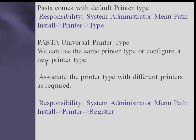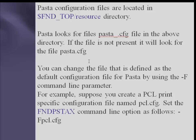Go to the System Administrator responsibility and navigate to Install > Printer > Register. Then go to menu path Install > Configuration Files. PASTA configuration files are located in the $FND_TOP/resource directory. PASTA looks for the file pasta_<printer>.cfg in that directory; if not present, it will look for pasta.cfg. You can change the default configuration file by using the -f command line parameter.